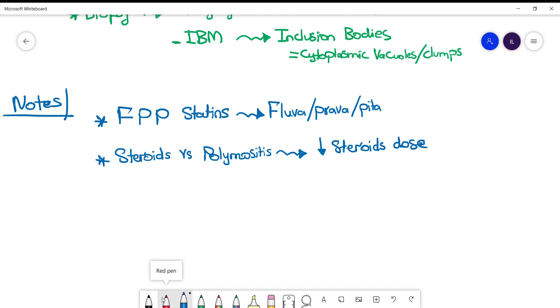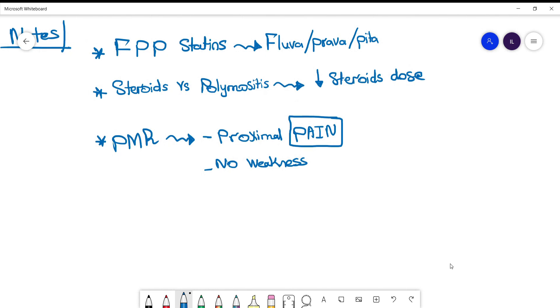The last thing is polymyalgia rheumatica. I did not mention it with the myopathies because it's a vasculitis, but they usually ask about it in the differential diagnosis. PMR is proximal pain and no weakness, and it has ESR elevated like polymyositis. Polymyositis is weakness only, and here it's pain only.